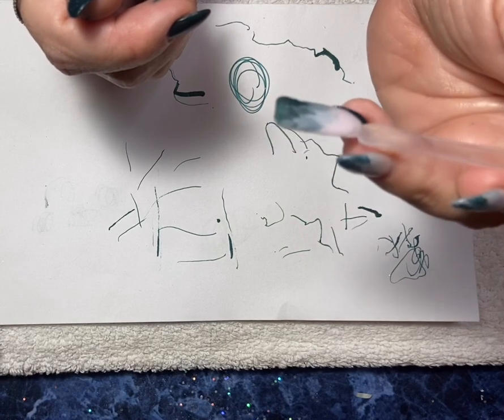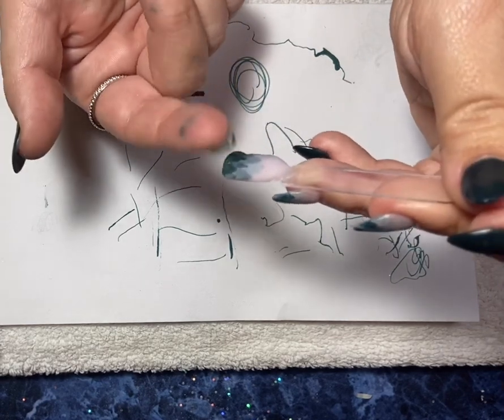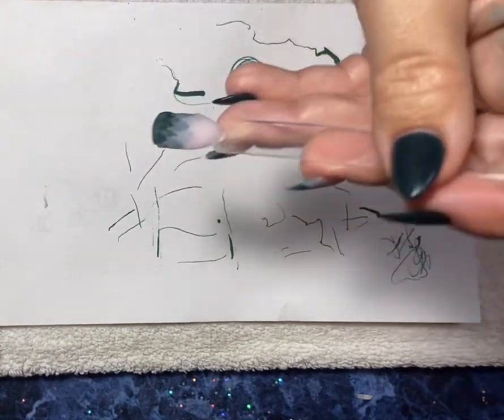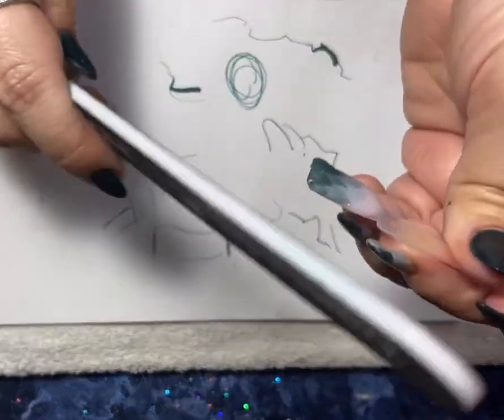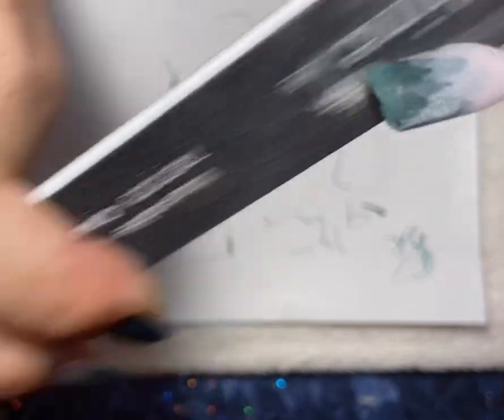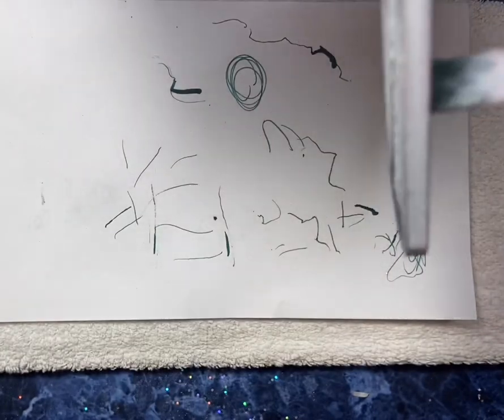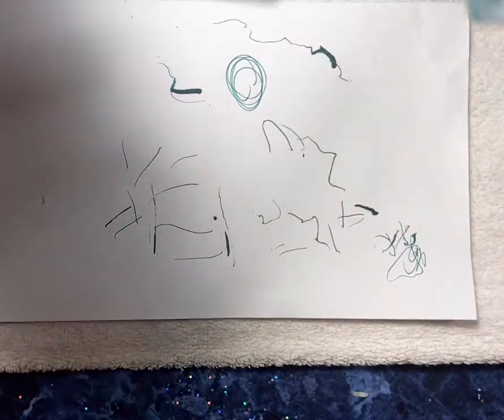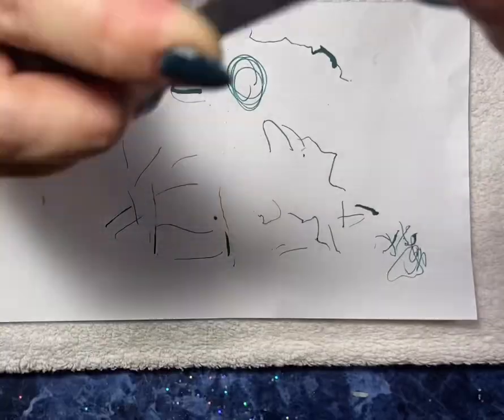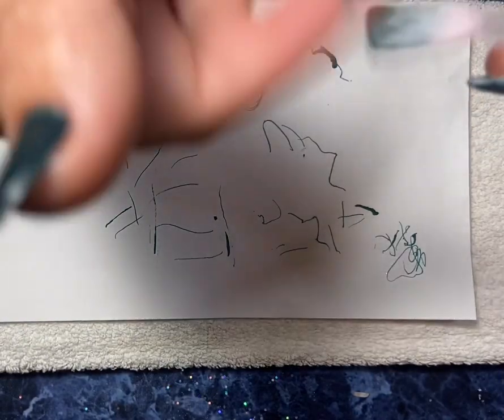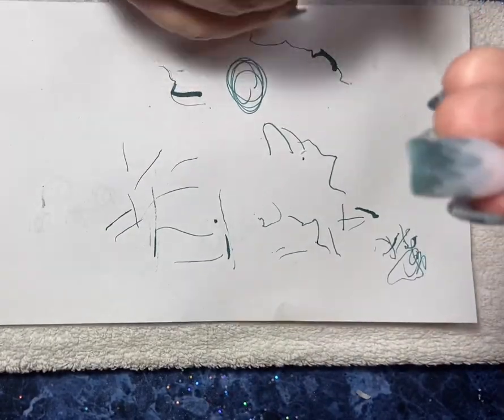Make sure the nail is nice and dry before you start to file. You can tap it to make sure it's all the way hardened and then go around the outside edges of your nail with the file.